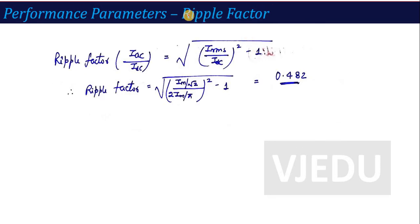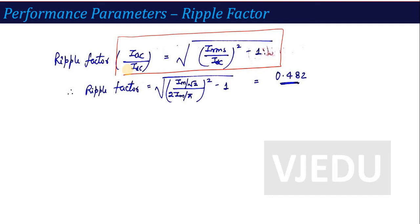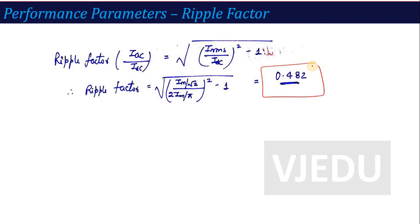The next parameter is ripple factor. The proof is the same as derived in the half wave rectifier, so it will not be re-derived here. The formula uses the RMS value Im/√2 and the average value 2Im/π. Putting in these values and calculating gives a ripple factor of 0.482 for the full wave rectifier.